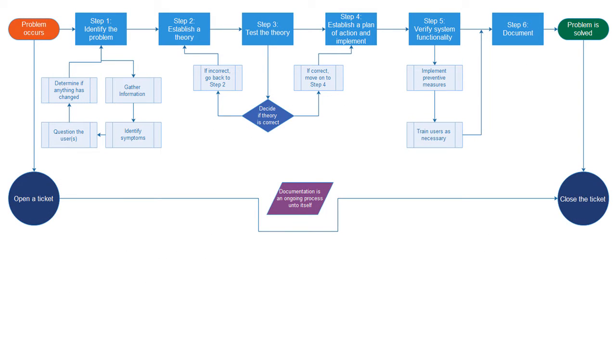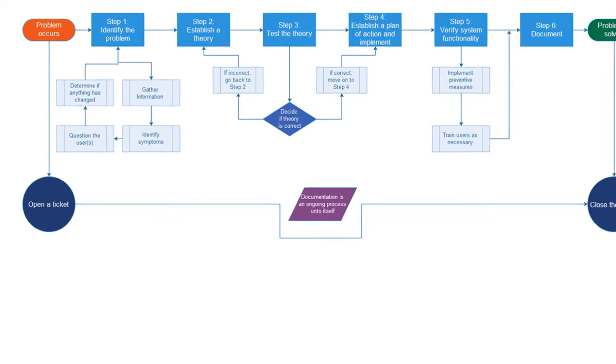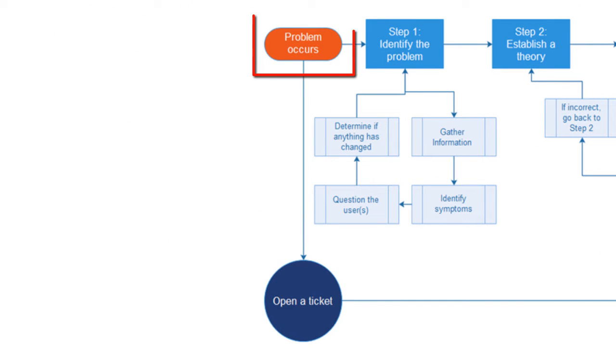Okay, here we have a basic diagram of this six-step troubleshooting process. We'll start from the left and move to the right. First, the problem occurs.